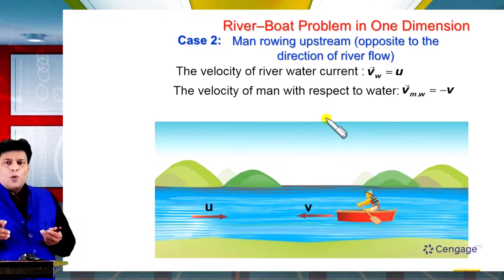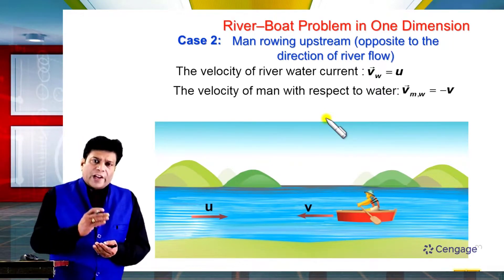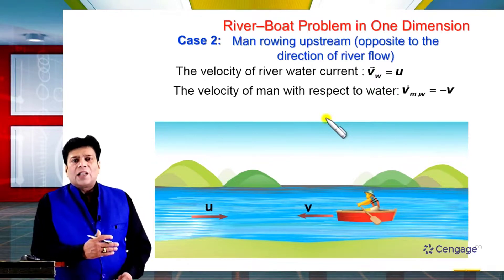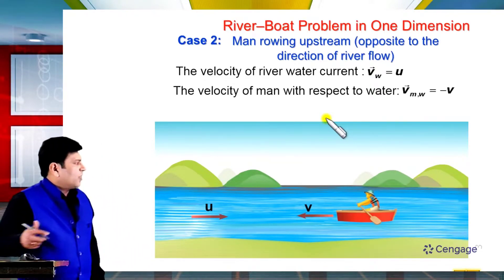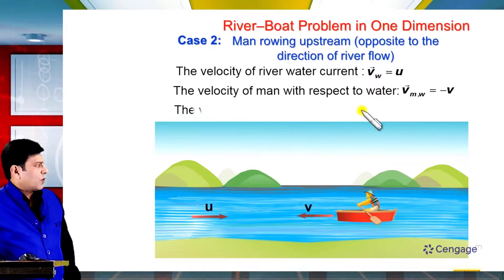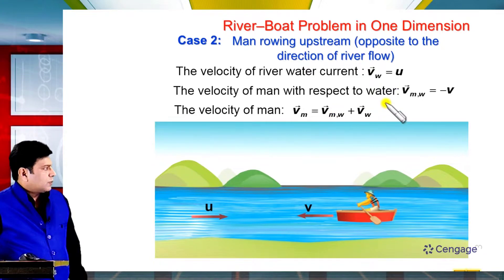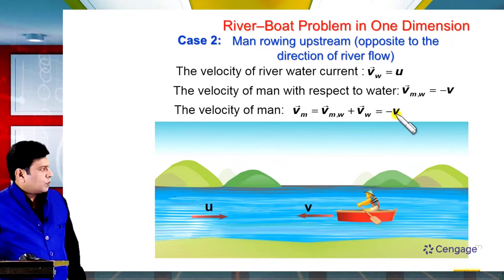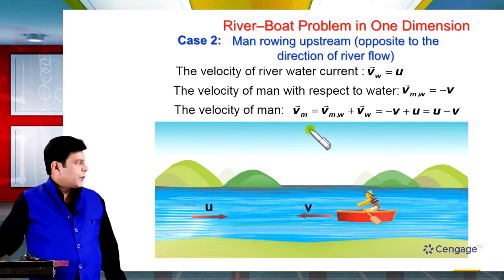Now with respect to ground, we write again the vector equation: velocity of the man equals velocity of the man with respect to water plus velocity of the water. Substituting the values with proper signs: this is minus V plus U, so this equals U minus V. This is the velocity of the man with respect to ground in the upstream case.